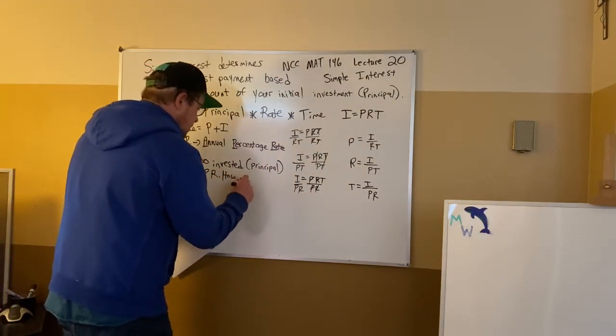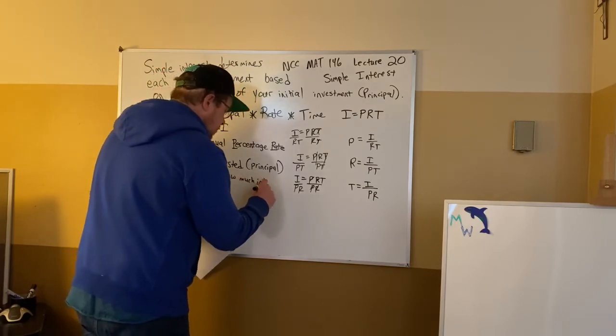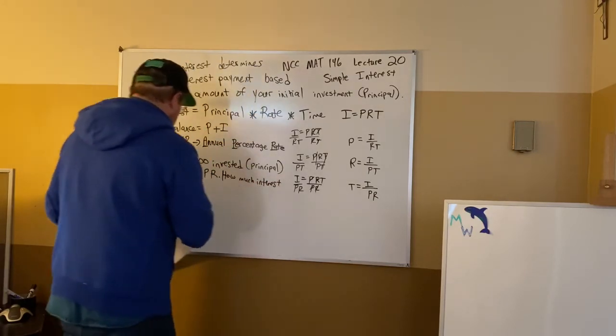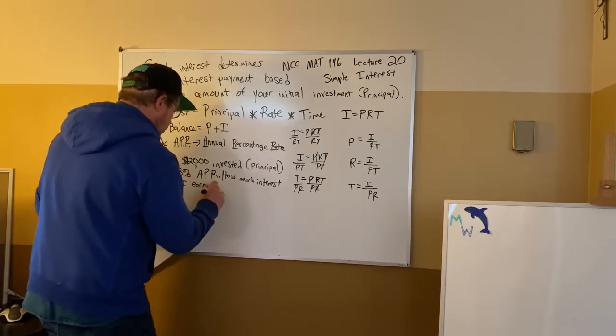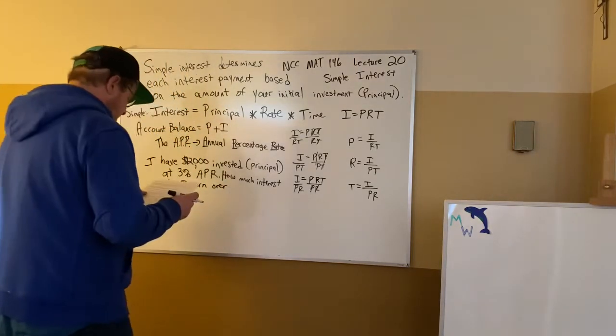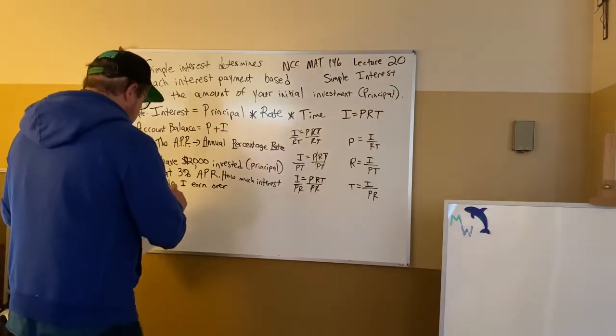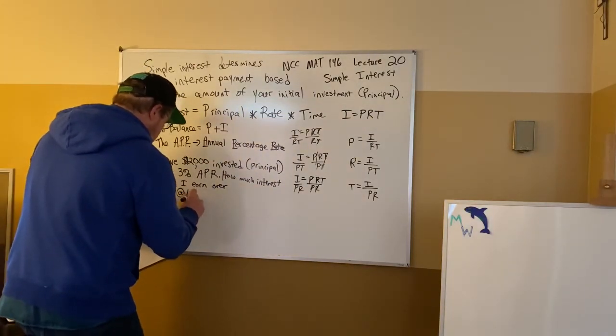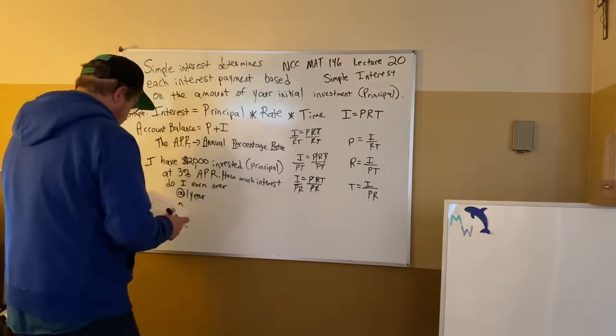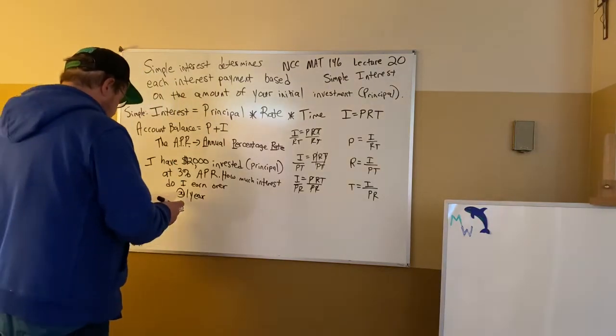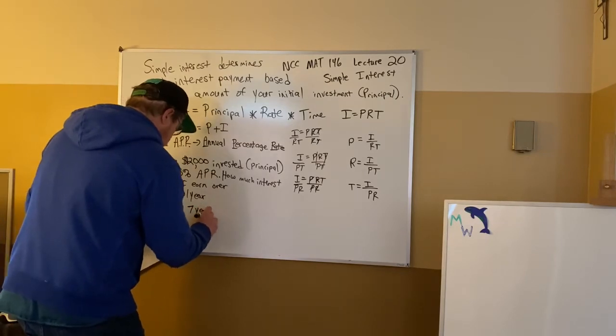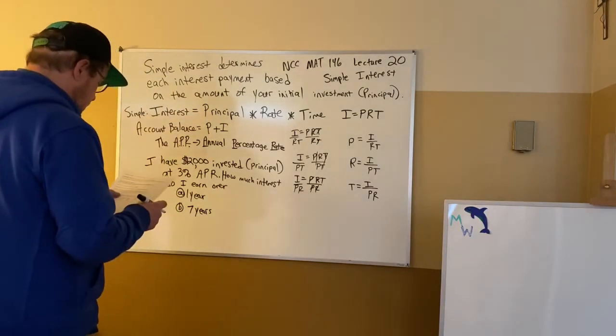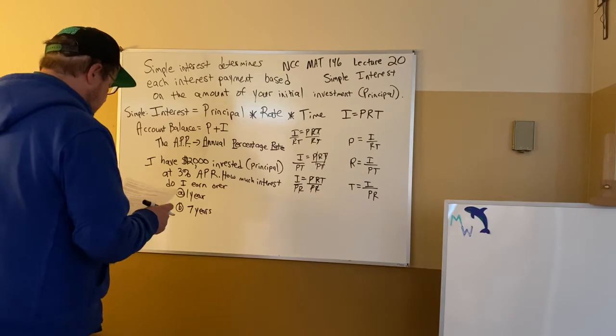And the questions come out like this. How much interest do I earn over when we have these different amounts of time? A. One year. B. Seven years. And C. Five months.